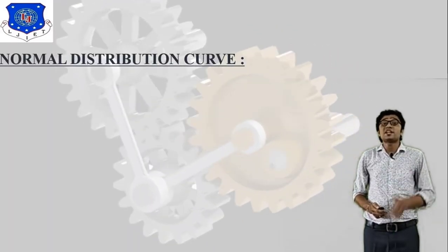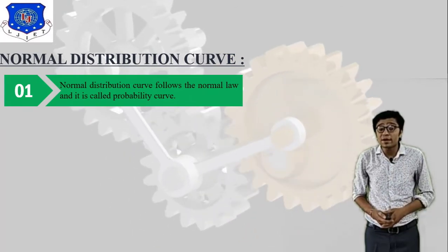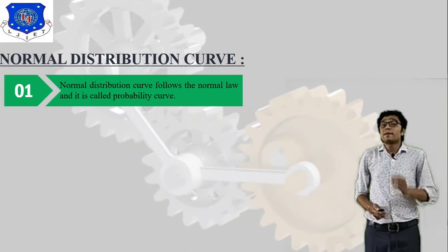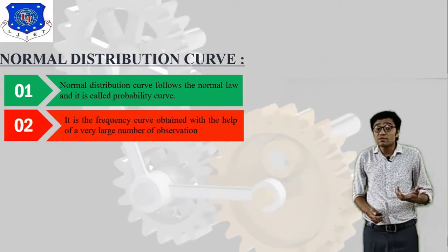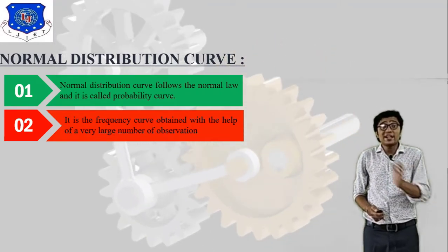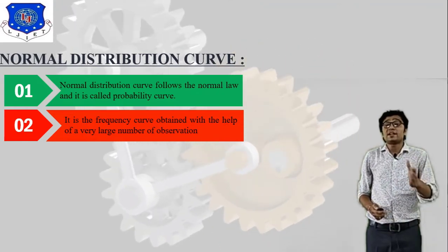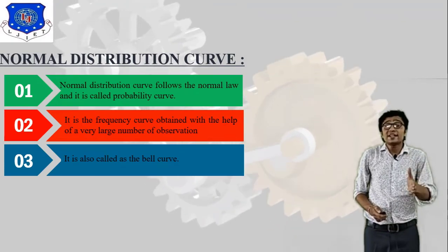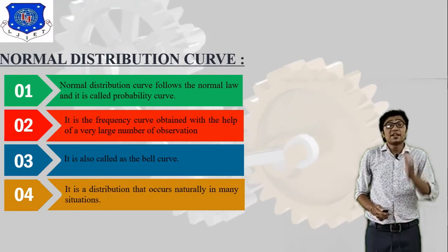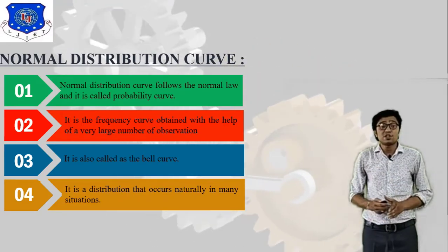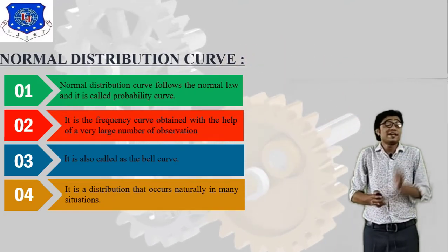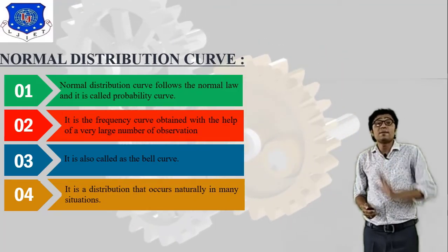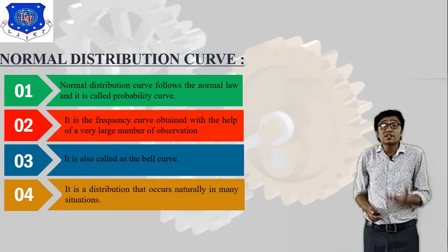The objectives of the normal distribution curve are as follows. First, it follows the normal law and is called a probability curve. Second, it is a frequency curve obtained with the help of a very large number of observations, related to the statistical quality control and six sigma concept. Third, it is also called a bell curve. Fourth, it is a distribution that occurs normally in many situations.